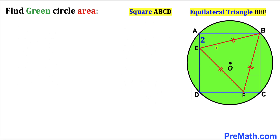Welcome to PreMath. In this video we have square ABCD fully inscribed in a circle with center O, as you can see in this diagram. This equilateral triangle BEF is fully confined within the square such that segment AE is 2 units. Our task is to calculate the area of the green shaded circle.